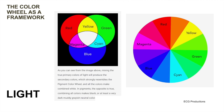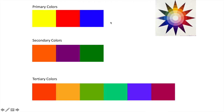But for us, the primary colors are red, yellow, and blue. The secondary colors and the tertiary colors kind of fall into place in terms of the traditional color wheel for pigment.